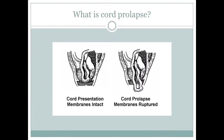This is a diagram that describes cord presentation as against cord prolapse. In cord presentation, we have an intact fetal membrane, while in cord prolapse, the membranes are seen to have ruptured.